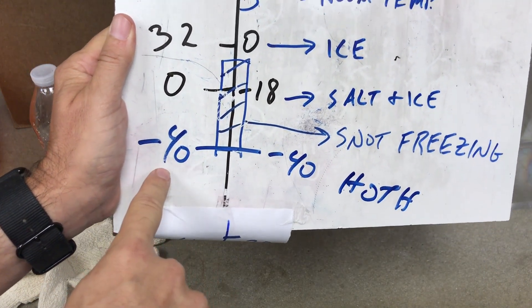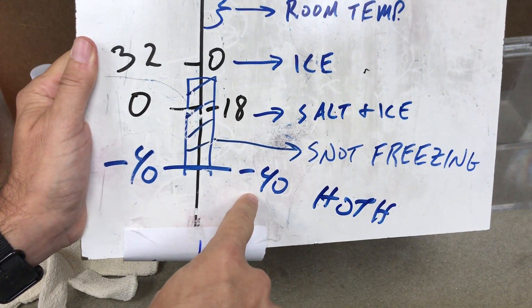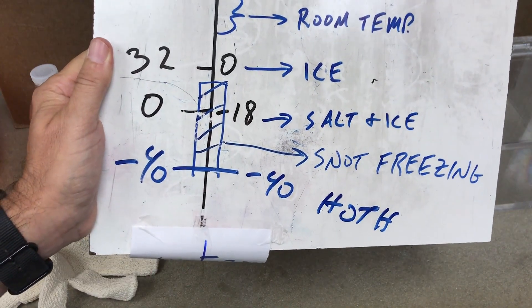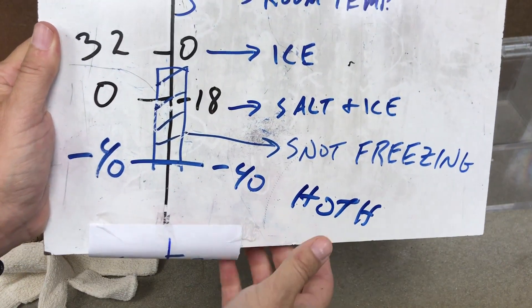Now we're down here to negative 40 Fahrenheit, which happens to be negative 40 Celsius. That's the point where the two temperatures agree. And this is the temperature of Hoth, you know, from Empire Strikes Back. Okay.